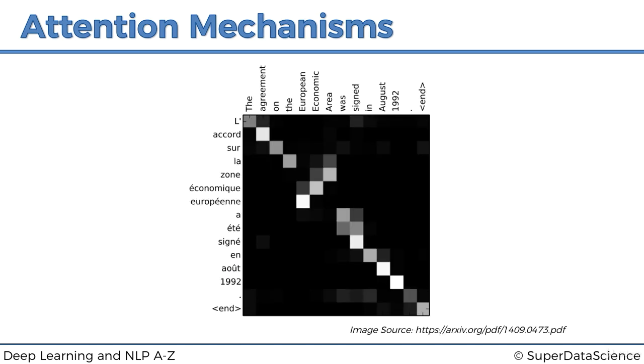This is from a research paper where Yoshua Bengio was one of the co-authors. And this is a translation example from English to French. So, here you've got, the agreement on the European area was signed in August 1992, full stop, end of sentence.